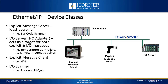Let's look at the four device classes for Ethernet IP. At the lowest level we have an explicit message server, which acts as target for explicit messages. Next up is the IO server or IO adapter — these devices are targets for both explicit and IO messages. Explicit message clients are less common; they are primarily used in an HMI to read and write information from other devices using explicit messaging. And lastly, there is the IO scanner, which acts as the originator in connections with other targets, effectively allowing communications to occur on the network.